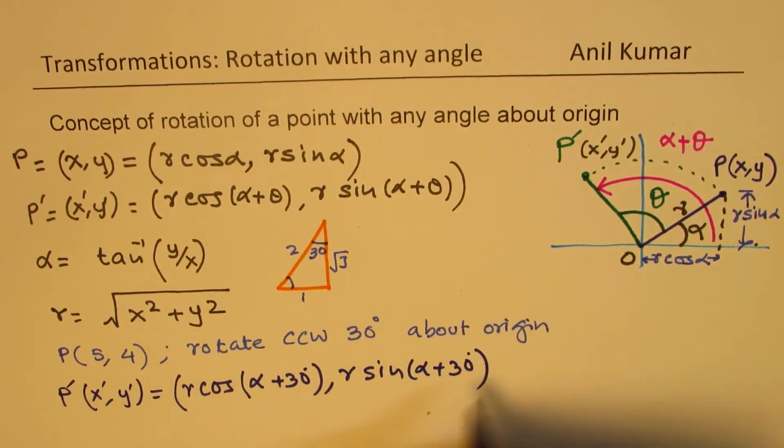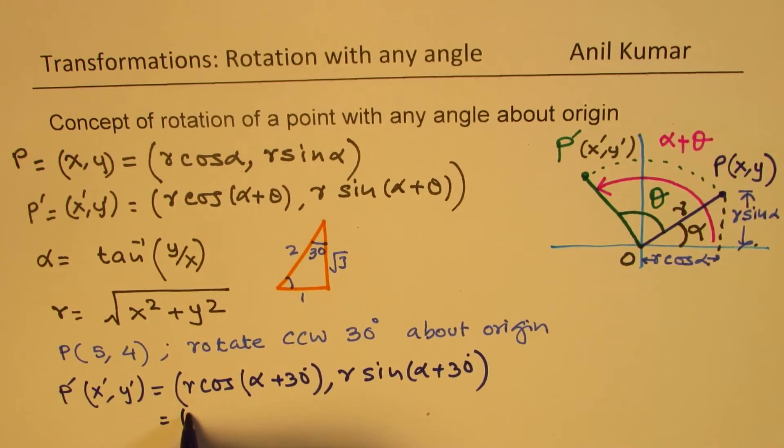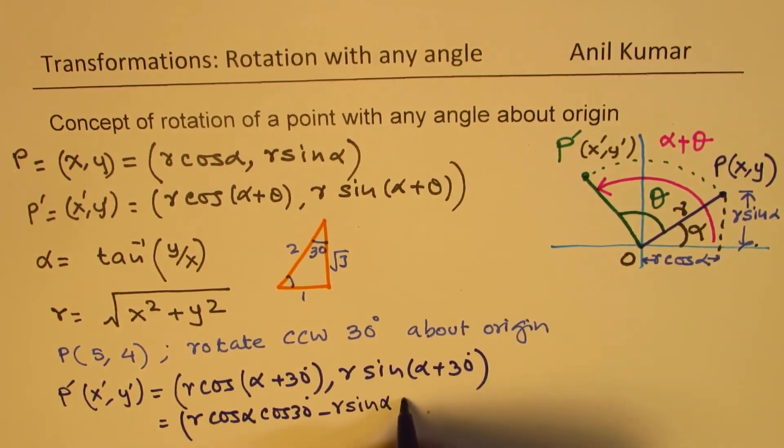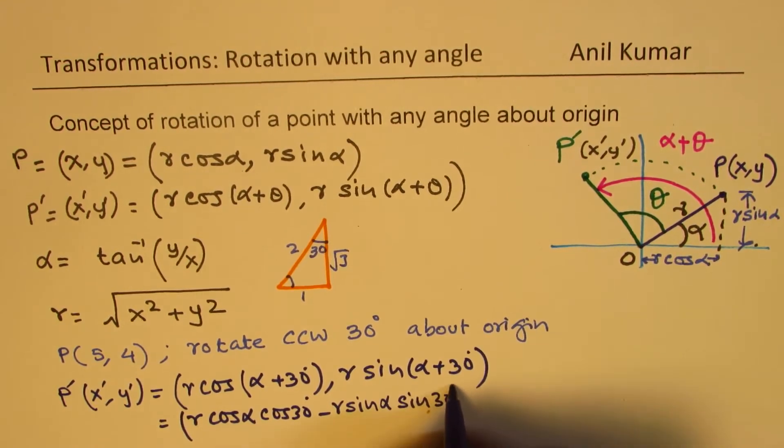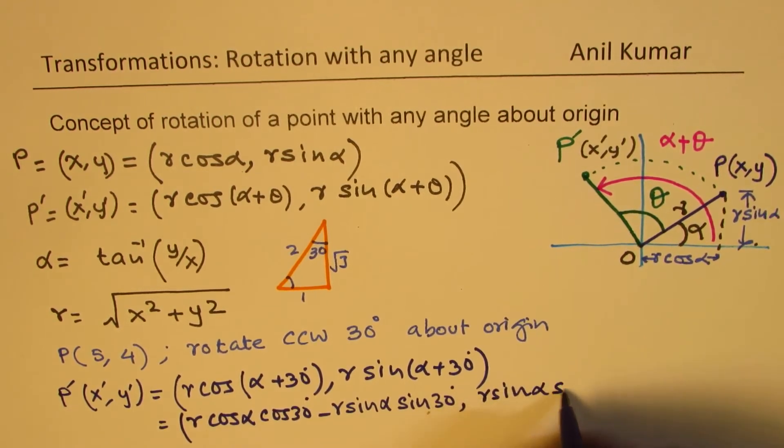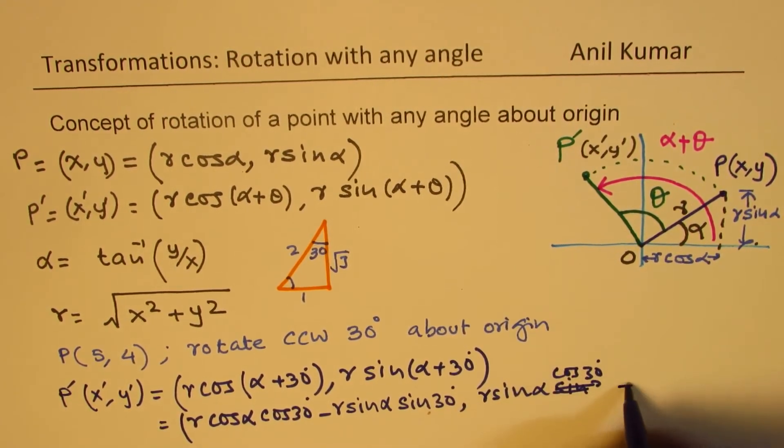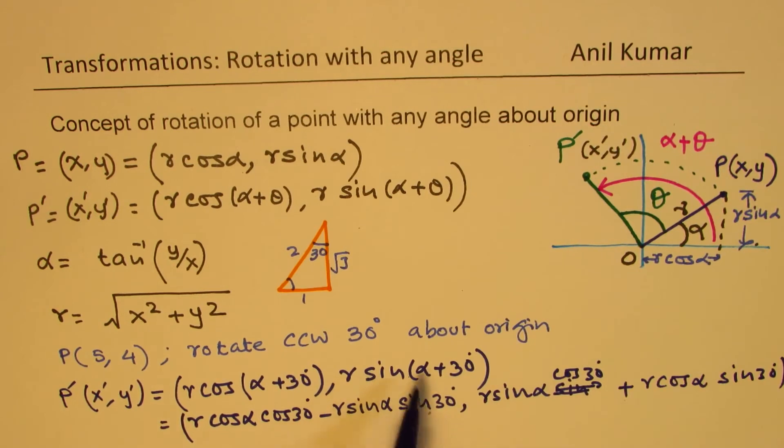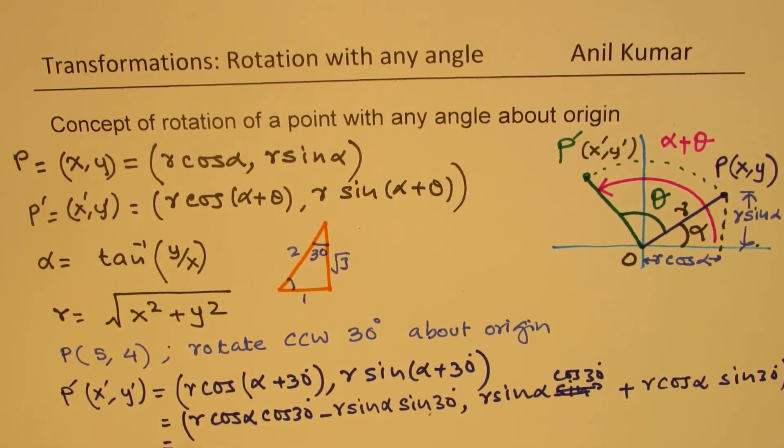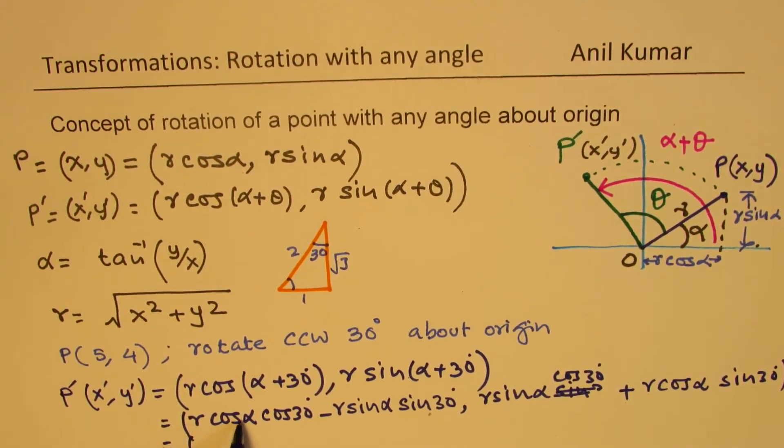Let us expand this. So when you expand, you get r cos alpha cos of 30 degrees minus r sine alpha sine of 30 degrees. So that becomes the x-coordinate value. The y will be r sine alpha cos 30 degrees plus r cos alpha sine 30 degrees. So we just expand it using the formula, compound angle formula, sine a plus b.